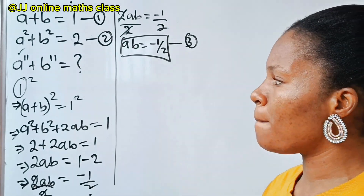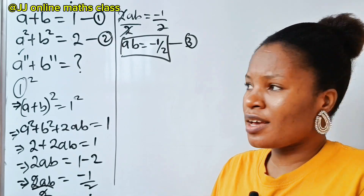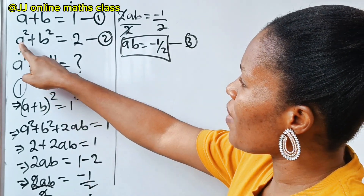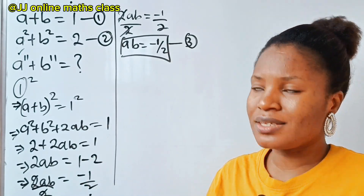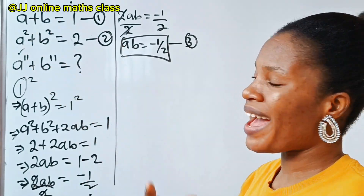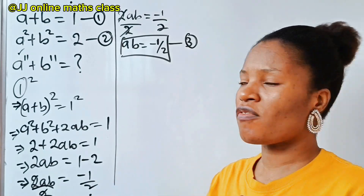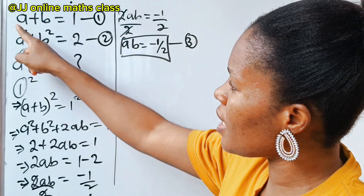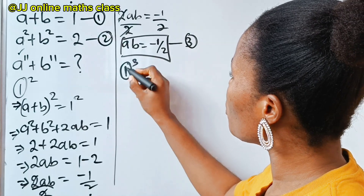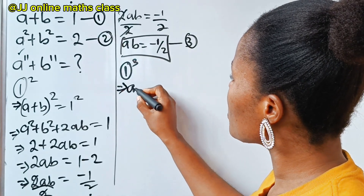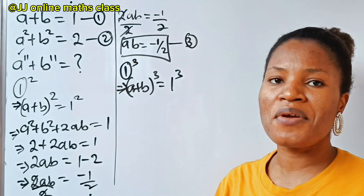Now we have found our ab. Recall that we need a to the power of 5. To get a to the power of 5, if we have a to the power of 2, we need a to the power of 3. Because when we multiply a to the power of 2 by a to the power of 3, according to the law of indices, we get a to the power of 5. So that means we need to cube equation 1 to get a to the power of 3, since we have a to the power of 2 already.